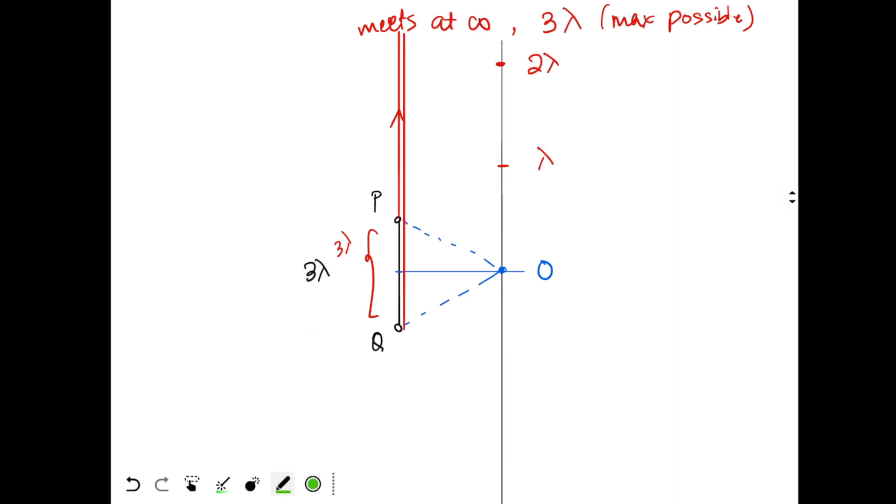So what are the minimas that I will obtain? I will obtain one minima when there's a path difference of lambda by 2, I'll obtain another minima when there's a path difference of 3 lambda by 2, then one more minima at path difference of 5 lambda by 2. And after this minima, I'll get again path difference 3 lambda at infinity, and I cannot get any more path difference possible.